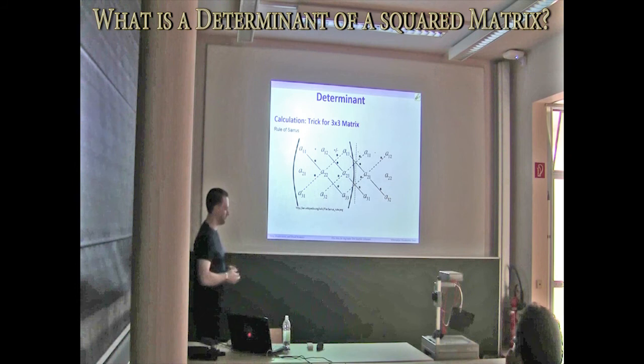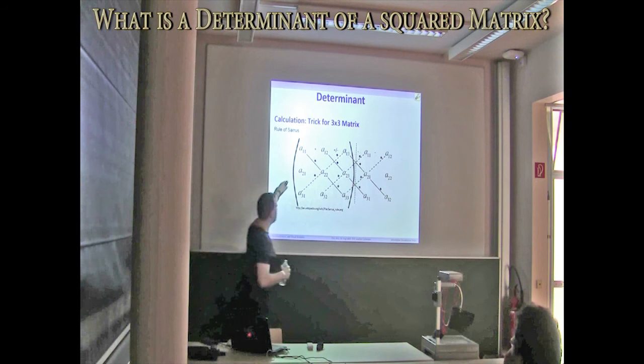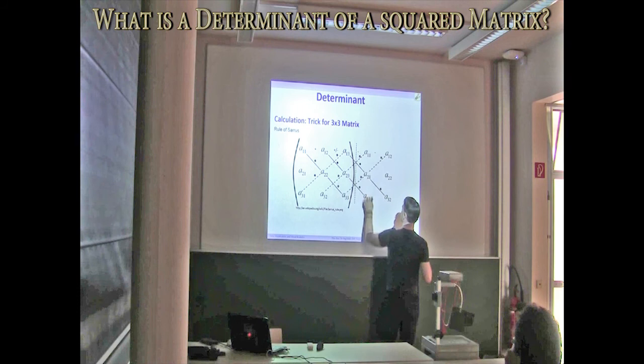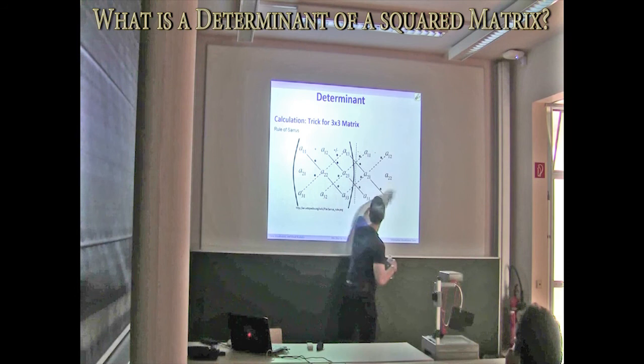Okay, for three-by-three, it's a very simple rule, it's called the rule of Sarrus. And the idea here is just to say, okay, we have here our first two columns that we put over there, A1,1, A1,2, A1,3, A1,1, A1,2, and so on. So just copy the first two columns over there.